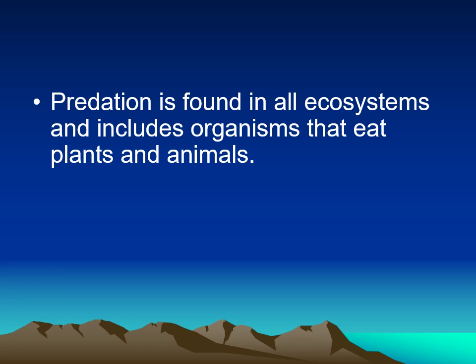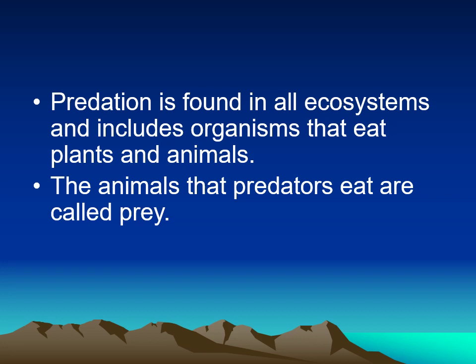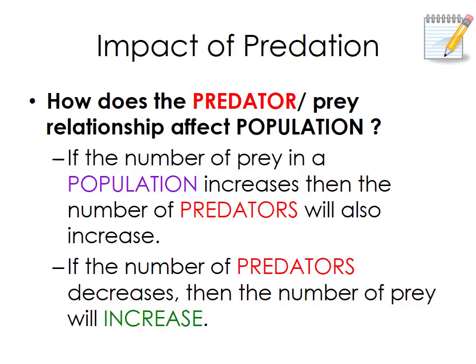Predation is found in all ecosystems and includes organisms that eat both plants and animals. The animals that predators eat are called prey, and the one who does the eating is called the predator.